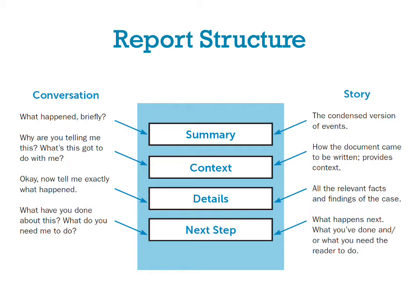If you go back to conversation: summary is what happened briefly; context is why are you telling me this, what's this got to do with me; details are tell me exactly what happened; and next step would be what have you done about it, what do you need me to do. In a written report, the summary is the condensed version of events, the context is how the document came to be written, the details are the relevant facts and findings, and the next step is what happens next — what you've done and/or what you need the reader to do.